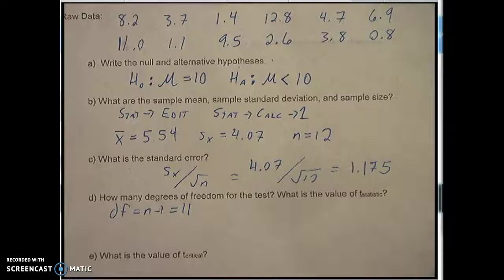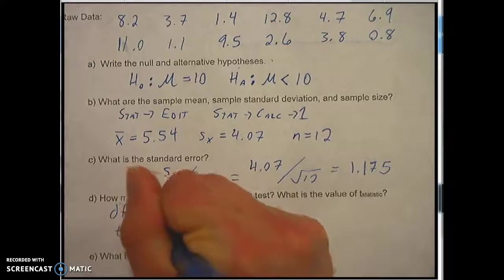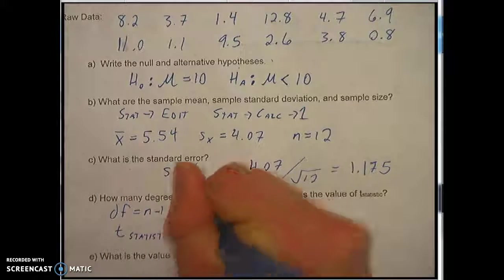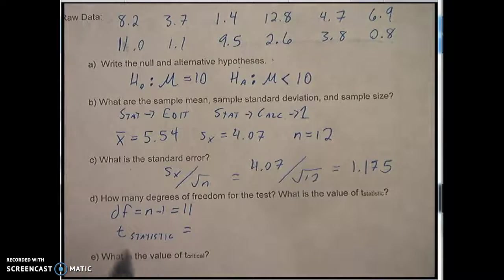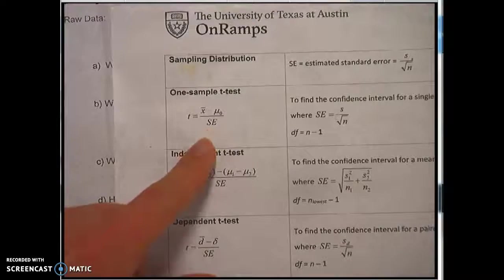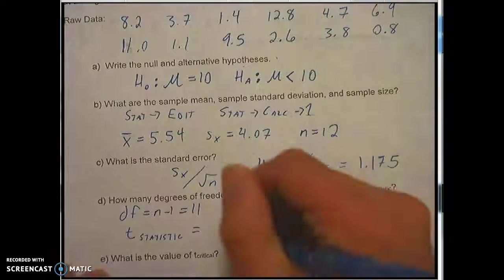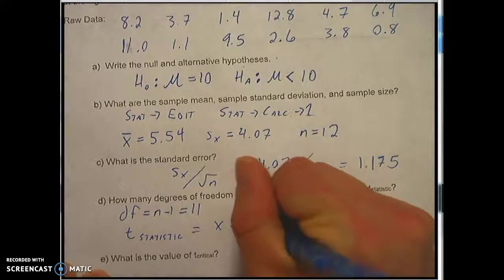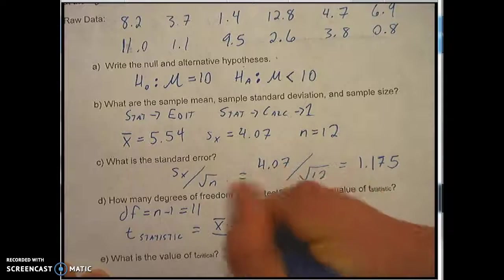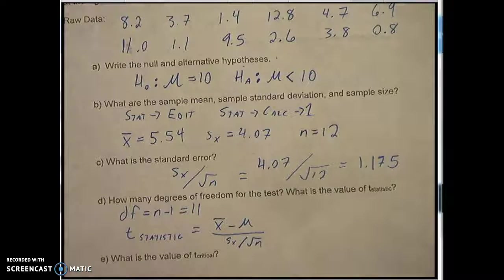Now to calculate the value of t statistic which we usually write like this, that's also going to come from your formula chart which can be found right here: x bar minus mu divided by the standard error or if you prefer you can write it like that.